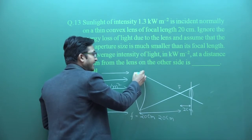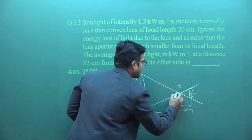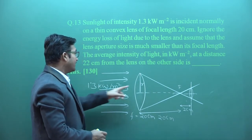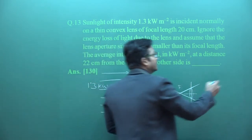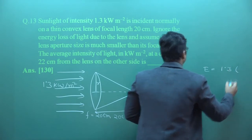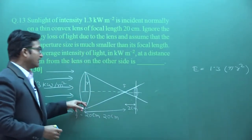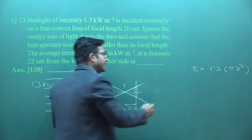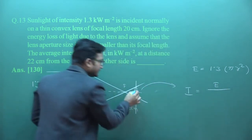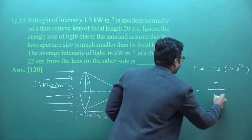Let's do the calculation. We know the lens aperture radius is R. We will multiply intensity by area to find how much energy was falling on the lens. Energy equals intensity, which is 1.3, multiplied by the lens area, which is π R². This energy reaches the focus without any loss. The intensity at the new area will be total energy divided by the small area A′.